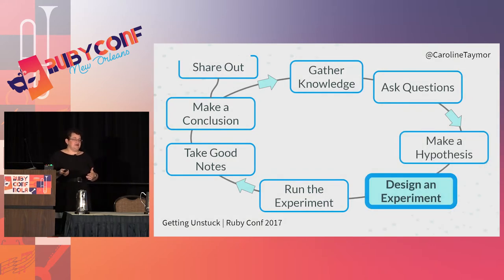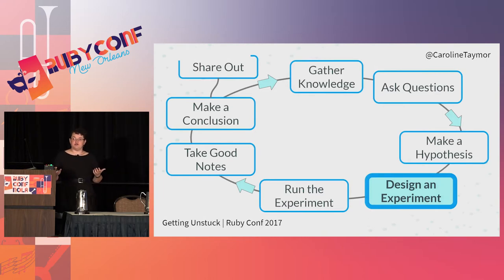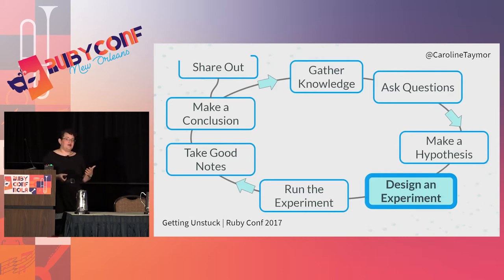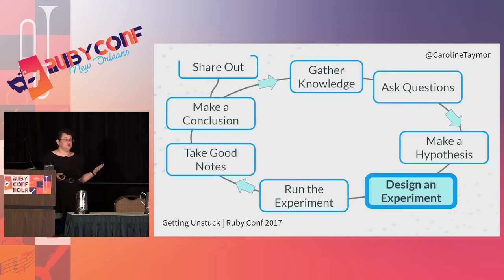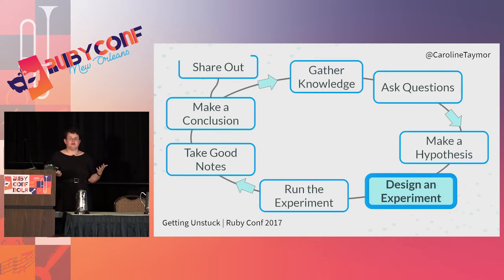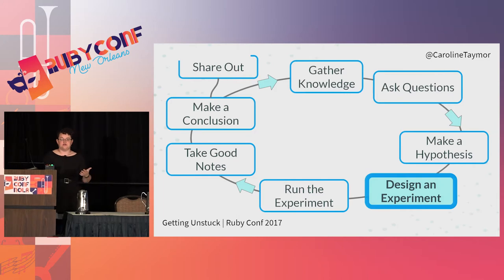Then you design an experiment. What information do you need to disprove your hypothesis? What information can you collect which will give you some sense that it's incorrect? As you're designing your experiment, it's important to be very detailed, because when you're doing scientific research, your research doesn't have any weight until it's been replicated by other scientists. So you need to be explicit enough in every step that someone else can do the exact same thing.